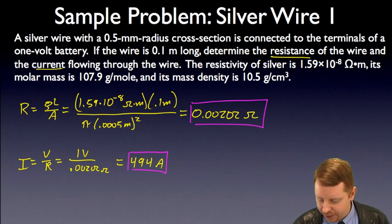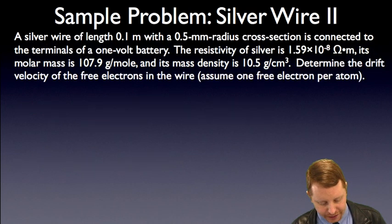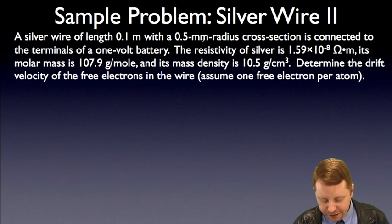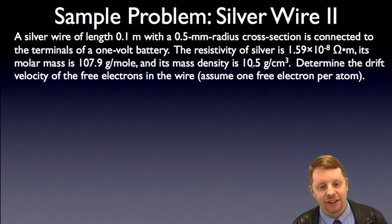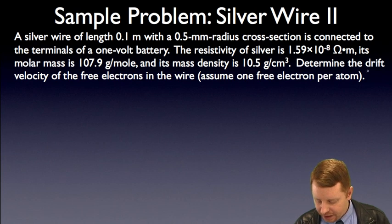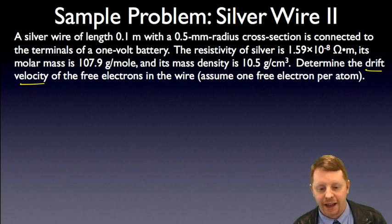All right, let's go back and see if we can't take this question a little bit further now. Same silver wire, same length, radius, resistivity, molar mass, mass density, but another question at the end. Determine the drift velocity of the free electrons in the wire, and assume one free electron per atom in the wire, per silver atom.